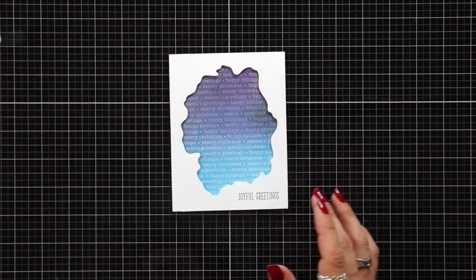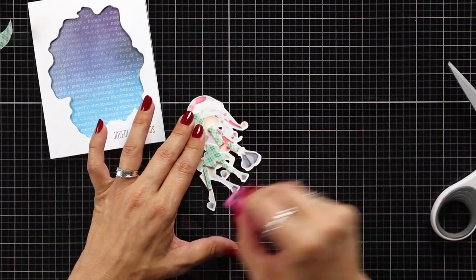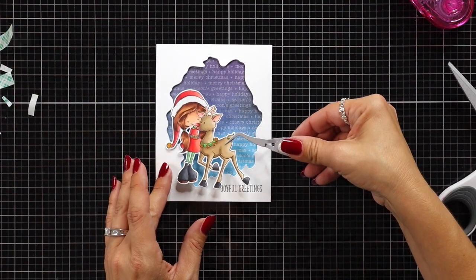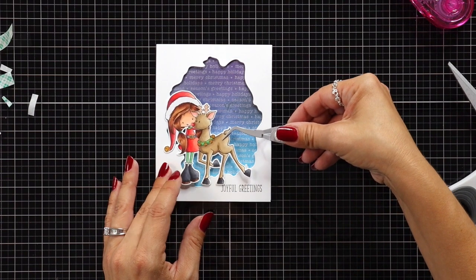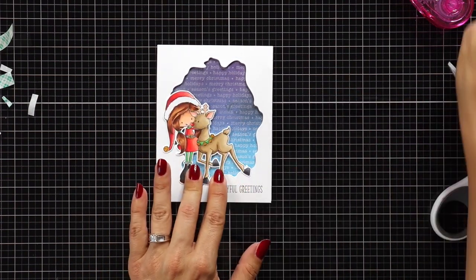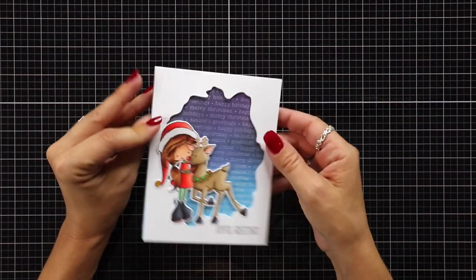Here you can see all that shimmer and shine that is in that mica spray. It was really cool for this background. For my image, I did line up some of it with foam tape and the rest with a tape runner. The reason for that is the tape runner is the part that's going to be adhered to the very front of the card, and then the foam tape just matches the foam tape that is on that window that I created, so it all is flat across the front.